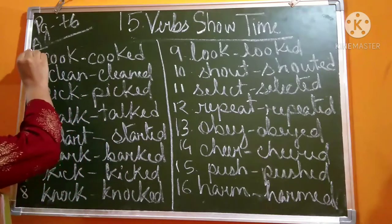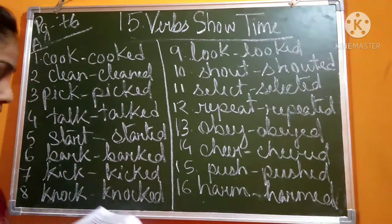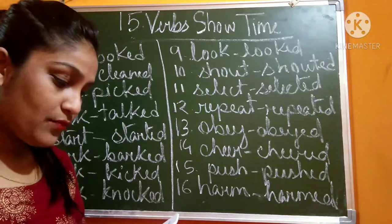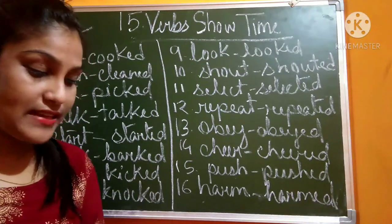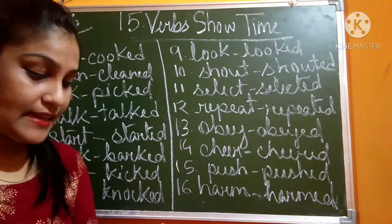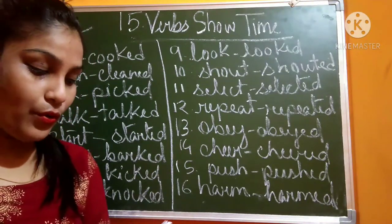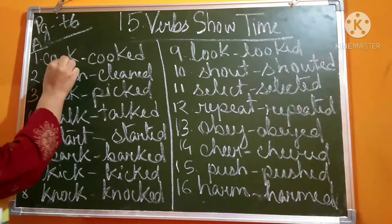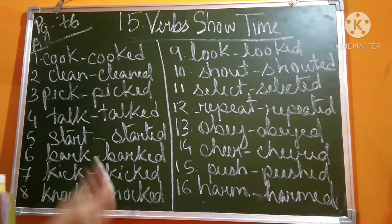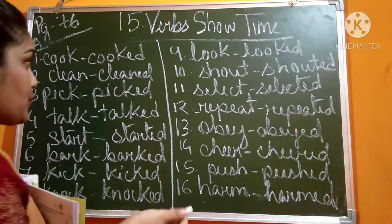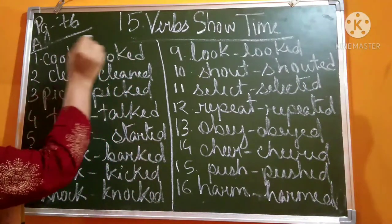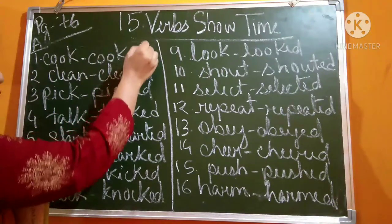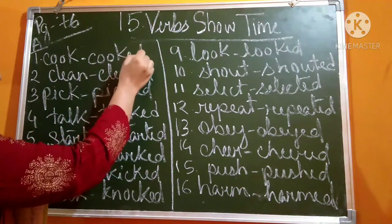We will do Exercise A first. The instruction is: change these verbs into their past forms and use them in sentences of your own. First, change the verbs into their past form — you have to put 'ed' at the end. For example, 'cook' becomes 'cooked'.